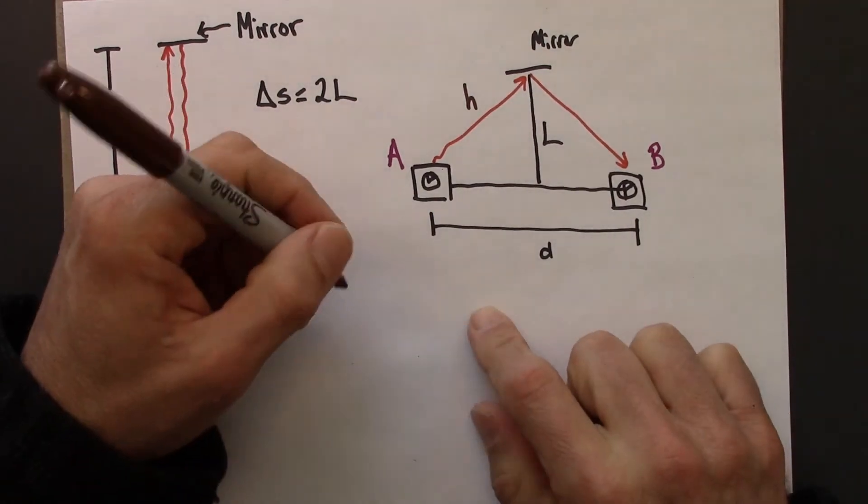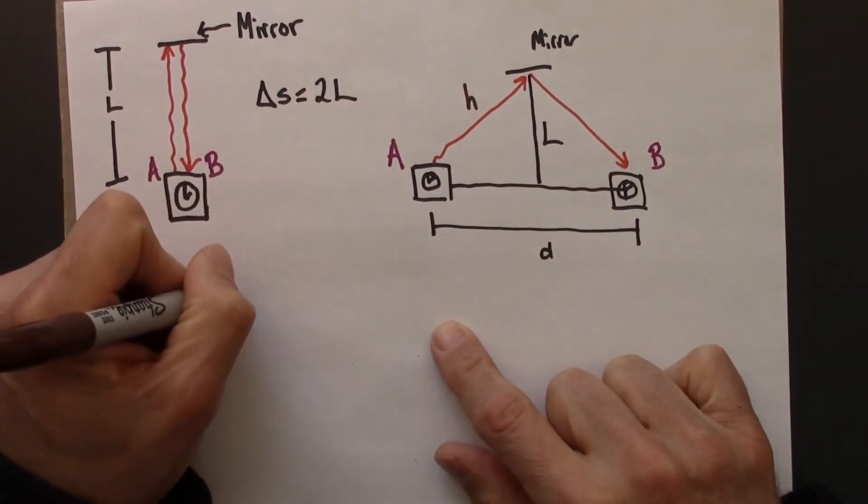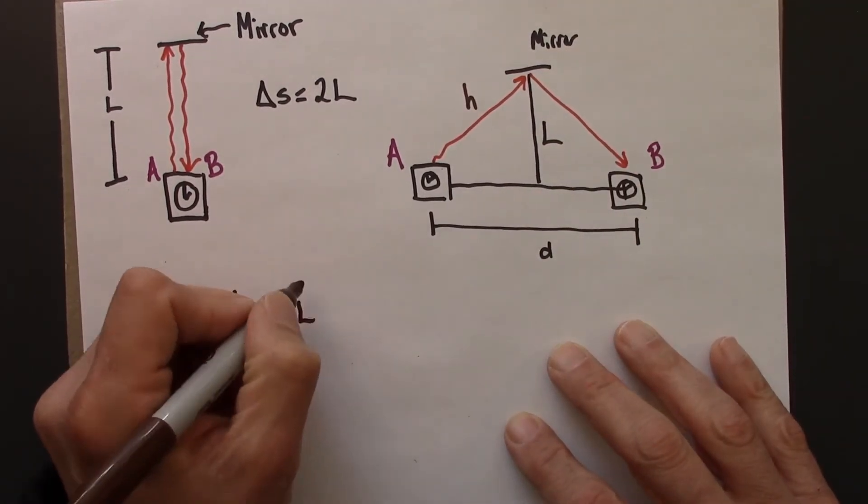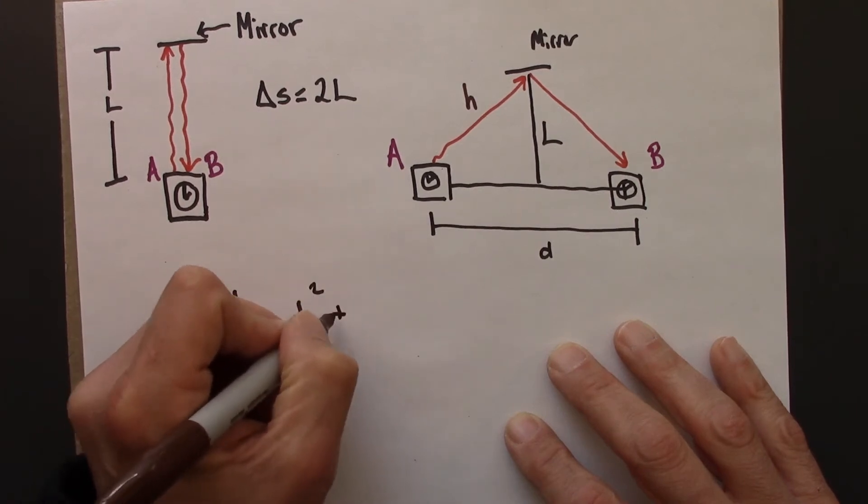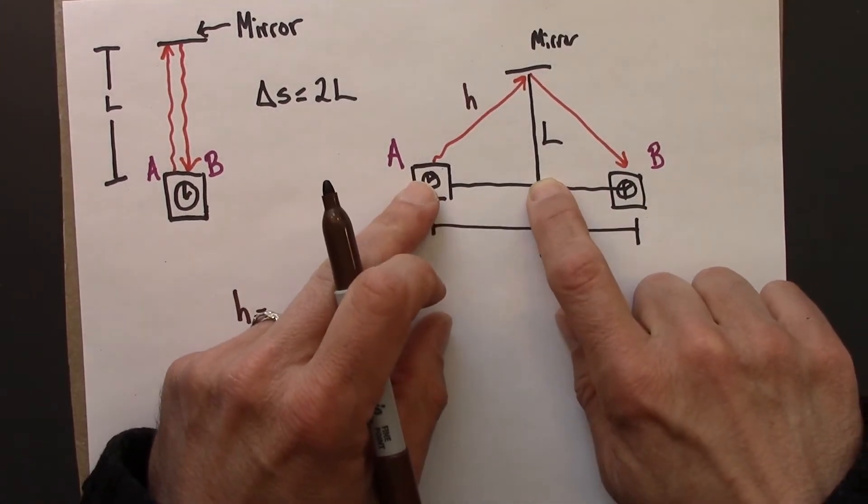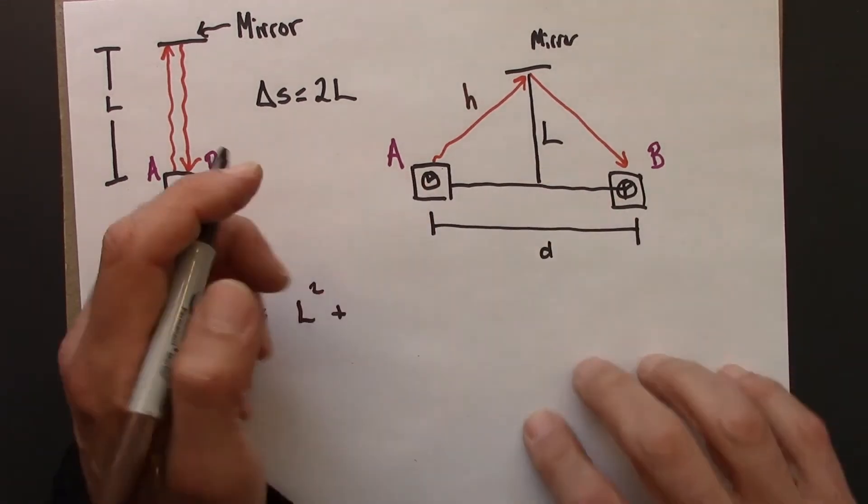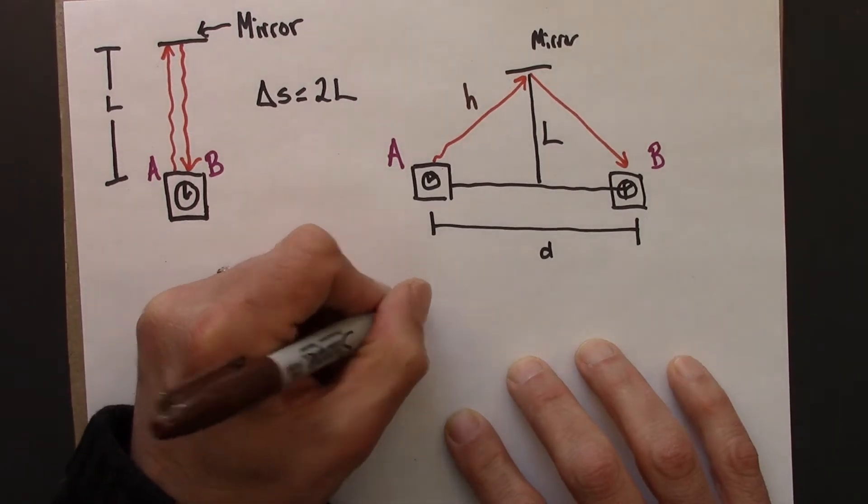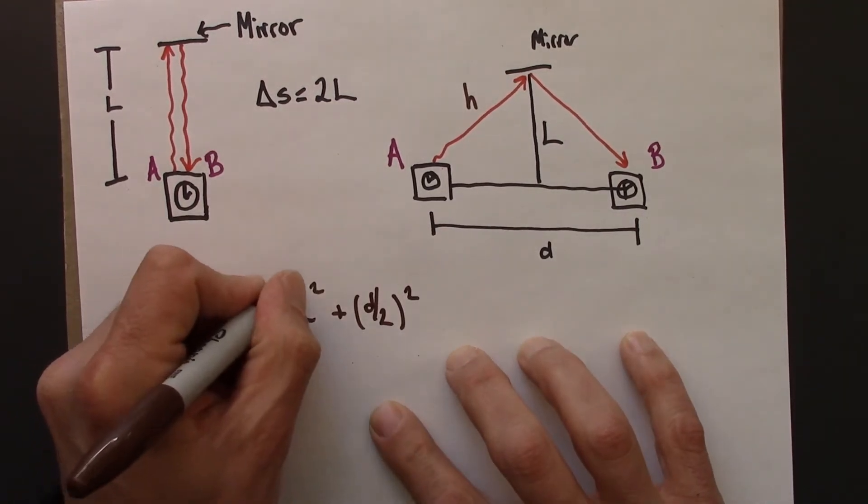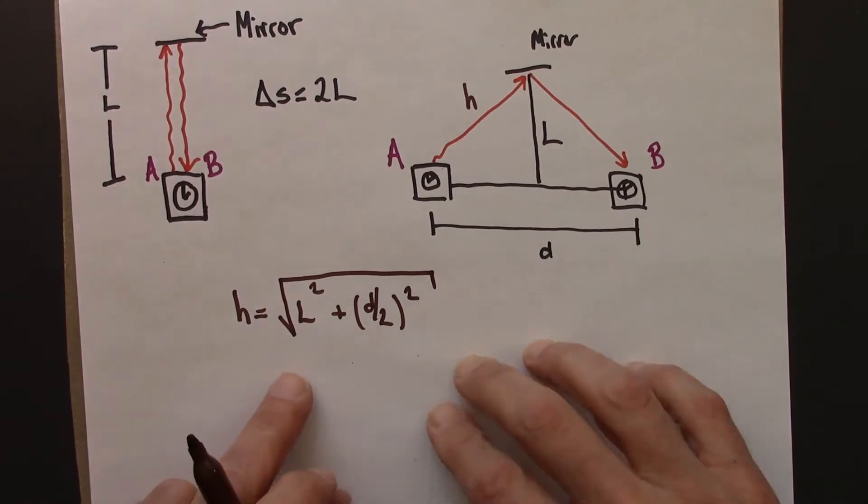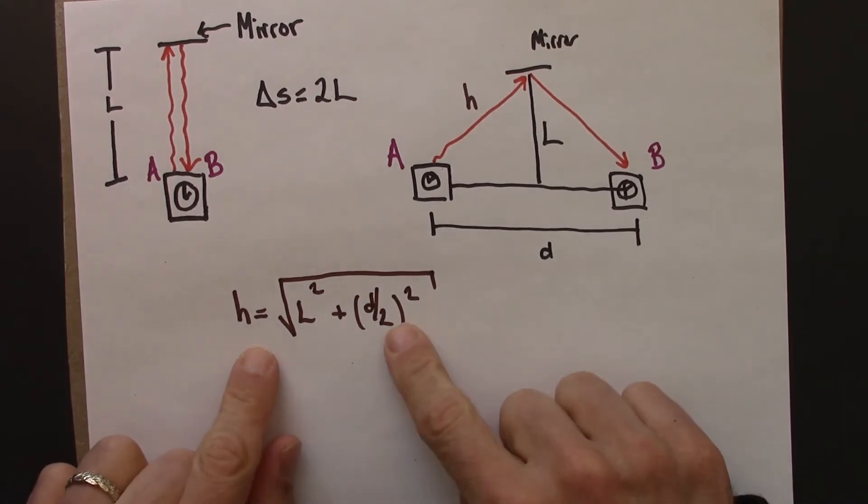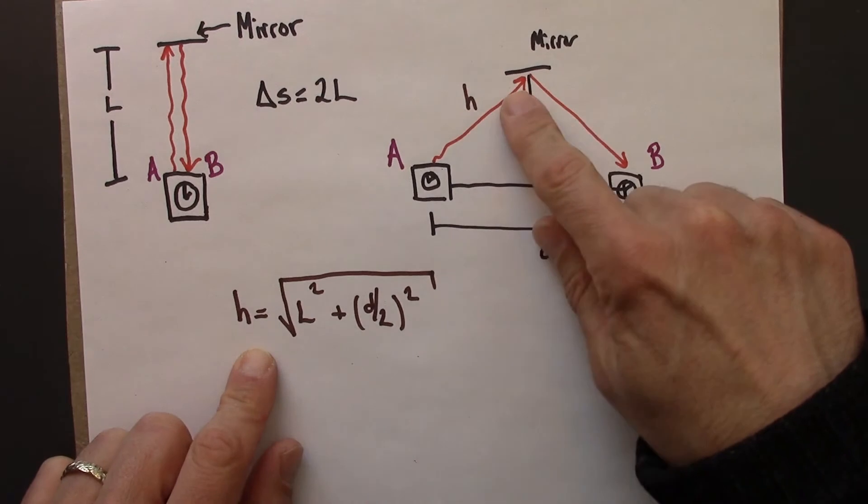I can figure out its length using the Pythagorean Theorem. So H is going to be L squared plus, and then this side is not D but it's D over 2 squared. Which, if you did the quiz that precedes this video, you will recognize this little calculation. So now we know what H is.